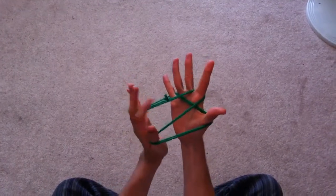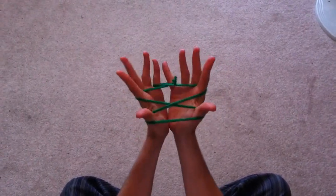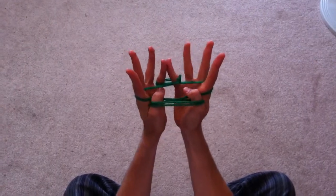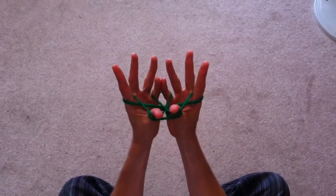It's like cat's cradle, so right hand, left hand, thumbs go over the near pointer string and take the far one on the pointer.